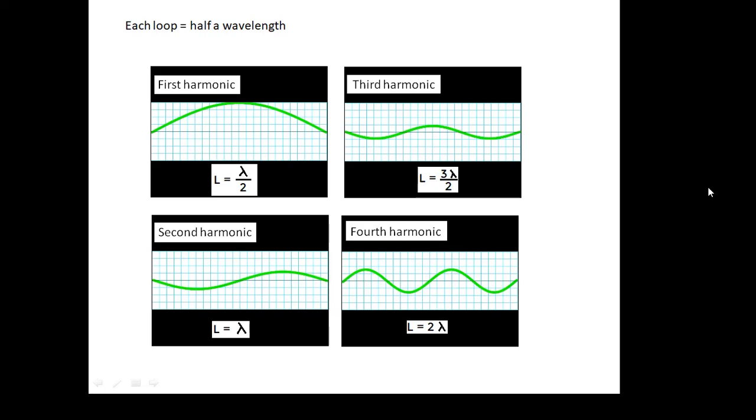Each loop is half a wavelength. For the first harmonic, it's just one loop, so the length of the string is half a wavelength: L equals lambda over two. For the second harmonic, we have two loops, so the length of the string is two halves of a wavelength - in other words, it's a wavelength. For the third harmonic, three loops means one and a half wavelengths. For the fourth harmonic, four loops means two wavelengths.